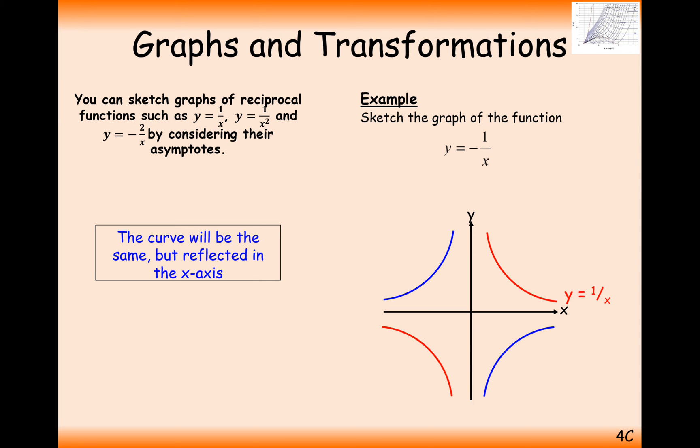So the 1 over x graph is going to look something like this, still tending towards the y-axis and the x-axis like that. This graph here is the same as 1 over minus x.